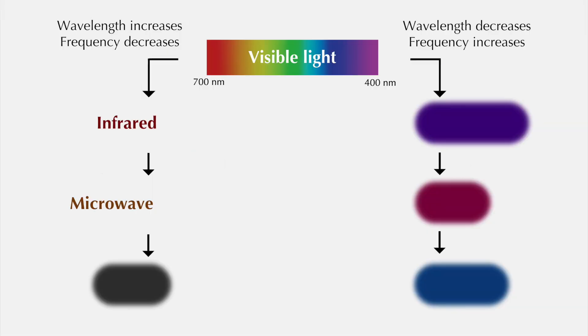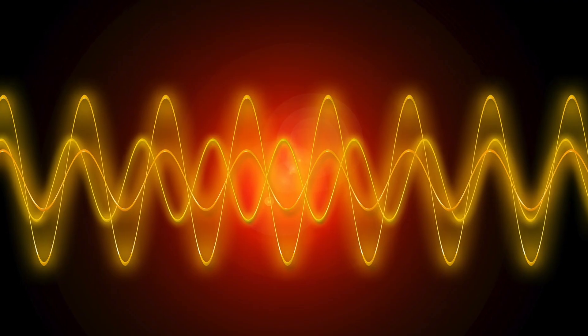When it comes to communication across Earth's surface, you still can't beat radio. We find radio waves at the low frequency end of the EM spectrum. Conversely, they have very long wavelengths, metres to kilometres long.